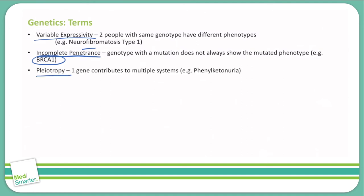Pleiotropy is where one gene contributes to multiple systems. We think of this with phenylketonuria. With phenylketonuria, you get light skin, intellectual disability, and sometimes a musty body odor. So there is one gene that codes for phenylketonuria and you see its effects in several systems of the body.